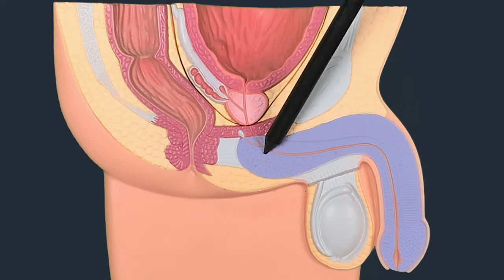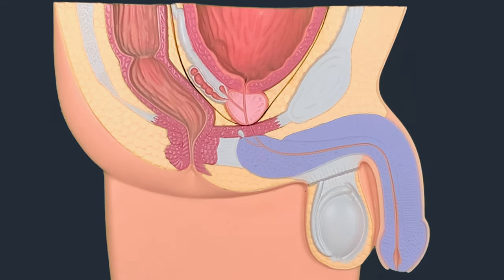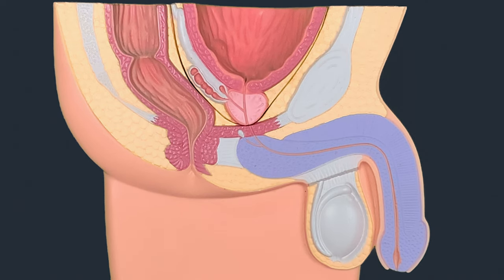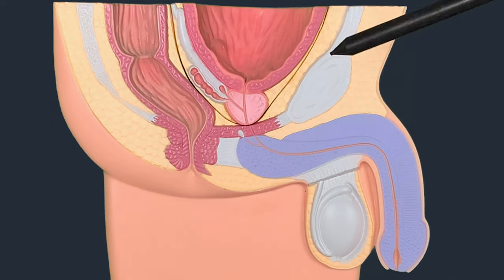The bulbar urethra is more associated with straddle-type injuries — for example, if someone falls on a bar or slips while riding a bicycle and lands on the bar. The membranous urethra is closely associated with catheterization and Foley's catheter insertion. In these situations, if someone is not gentle and applies undue force, it may cause rupture or damage to the membranous urethra.